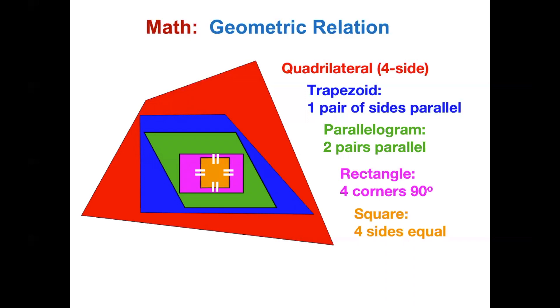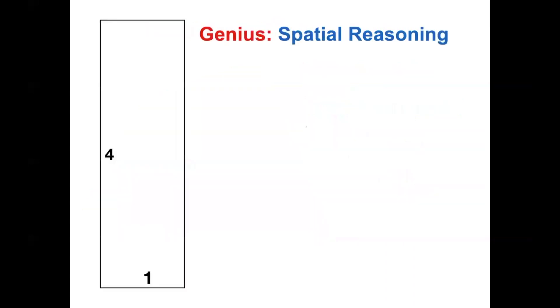This sketch helps us to understand their relationship. Now, it's a genius challenge on spatial reasoning. If the size of this strip is 1 and 4, how big is the star in terms of the width and angle?